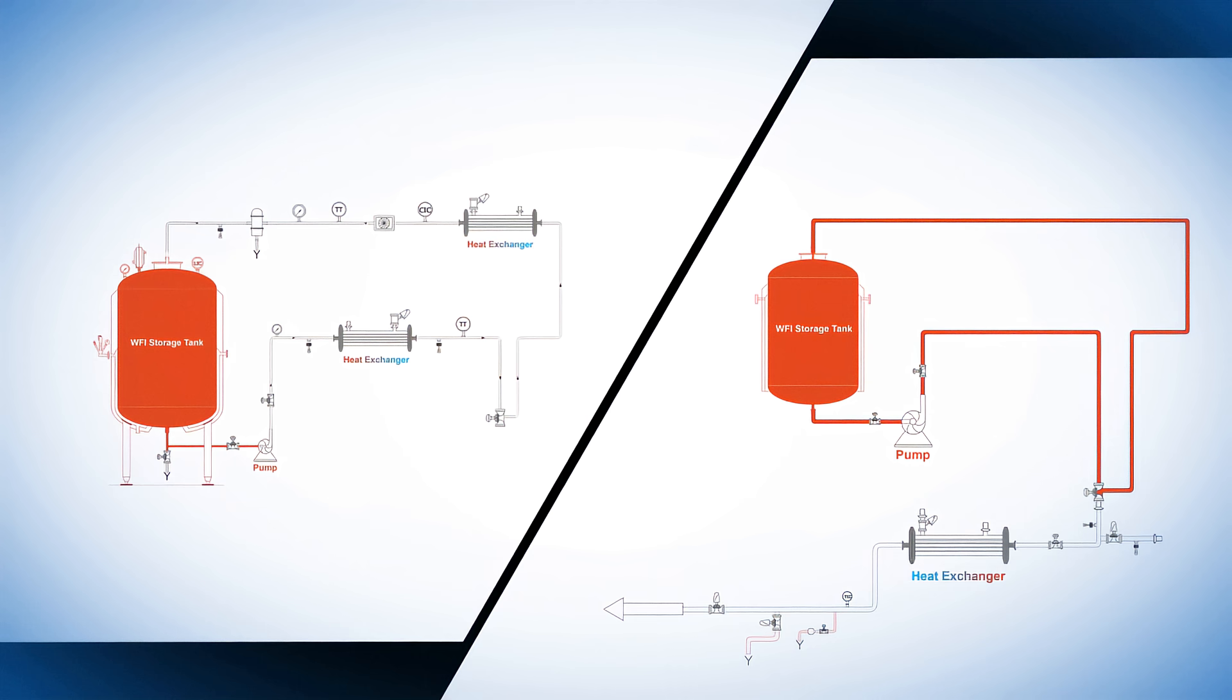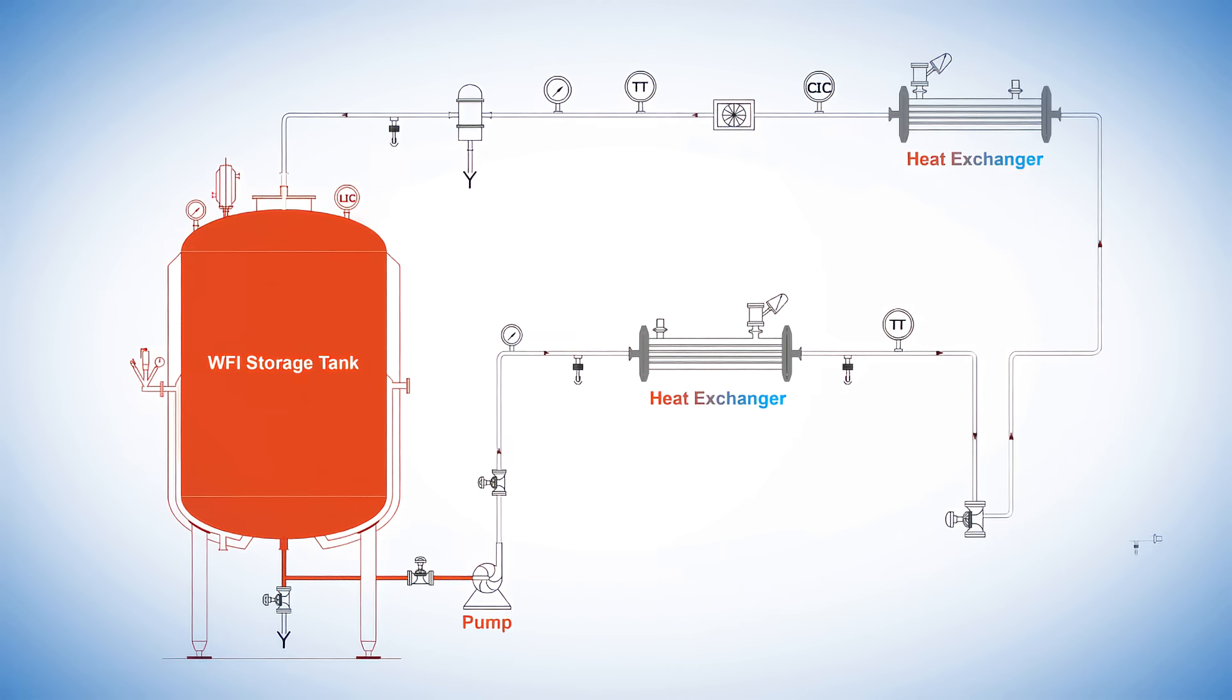There are various methods used in the industry to provide this cooled water. In one method, hot purified water from a stainless steel storage tank is cooled using an inline heat exchanger upstream of the dispensing point. Any water returned to the storage tank is then reheated with a second heat exchanger on its way back.